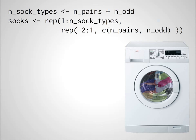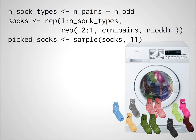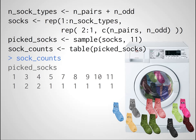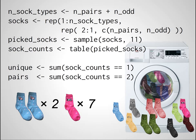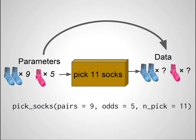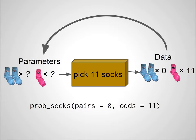And now it's time to wash our socks. Finally we pull out 11 socks at random and we can count them up — we got two pairs and seven unique socks, and of course we can do this counting using R. Now we have a generative model where we can put in fixed parameter values, run the model, and it will generate fake data for us. But this is the exact opposite of what we actually want. We know that Karl Brumann pulled out eleven unique socks. What we want is to go from the data and infer back what could be probable parameter values given this data.